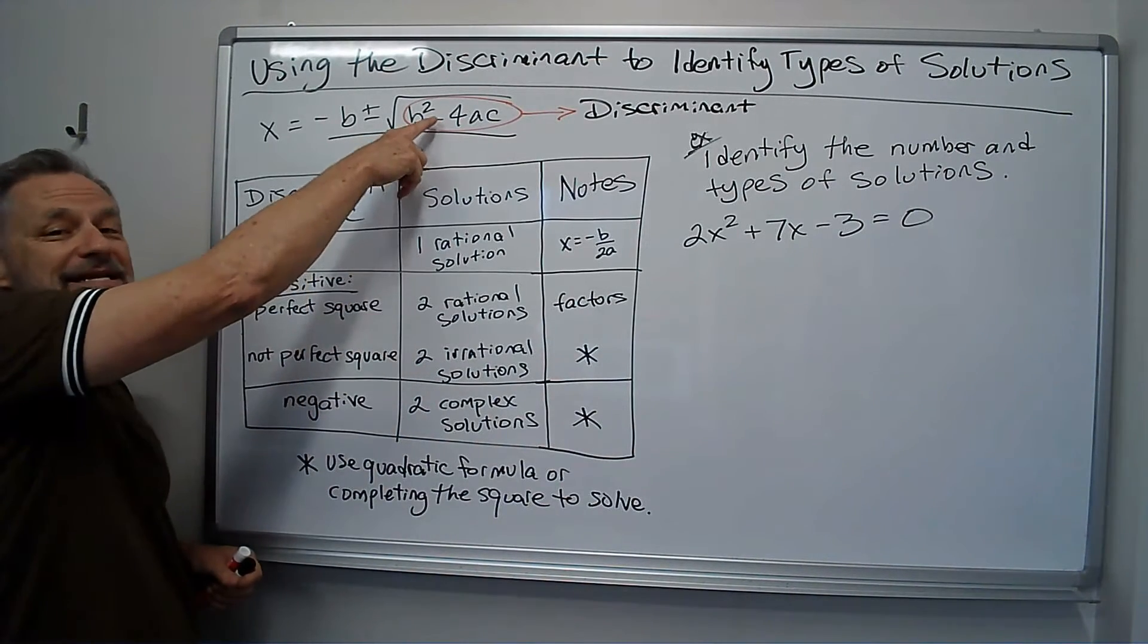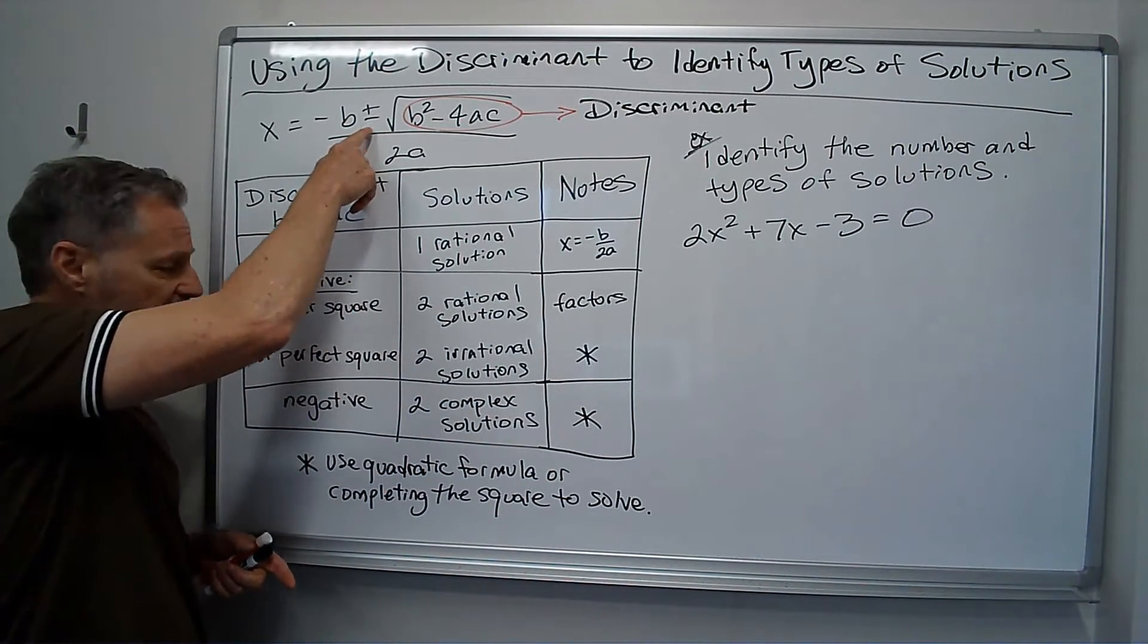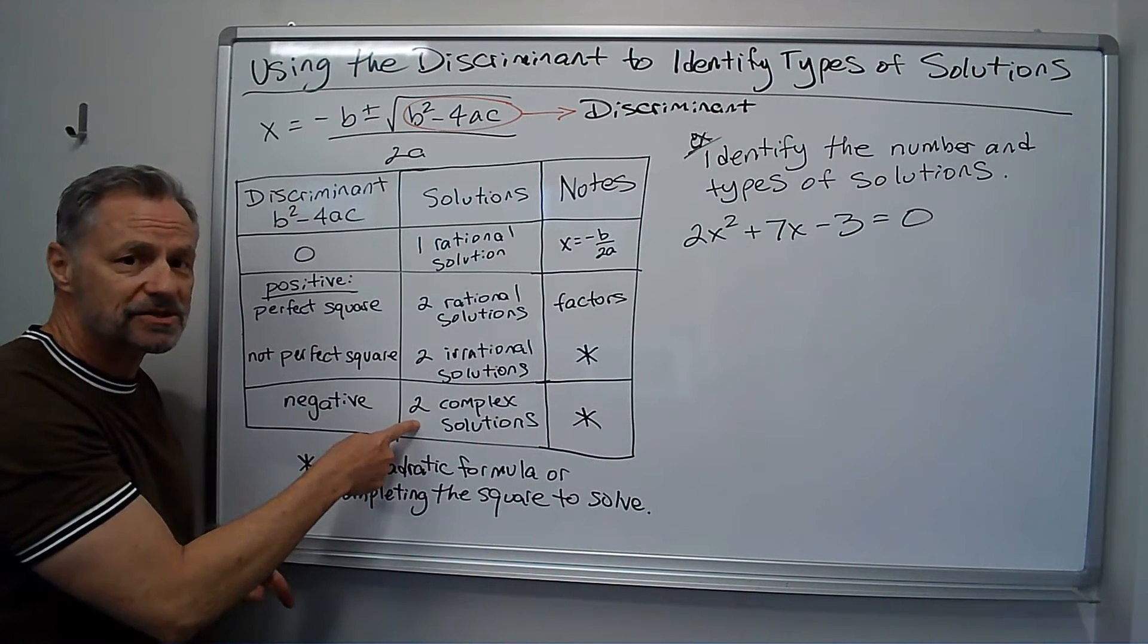If that number is a negative number, it's a complex number, and I'm going to get two answers because of the plus or minus, so I get two complex solutions.